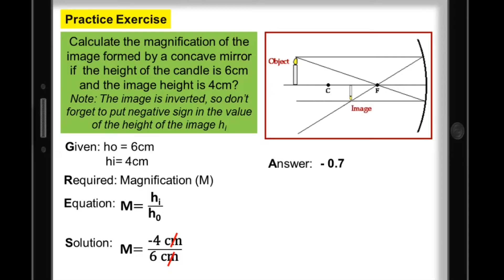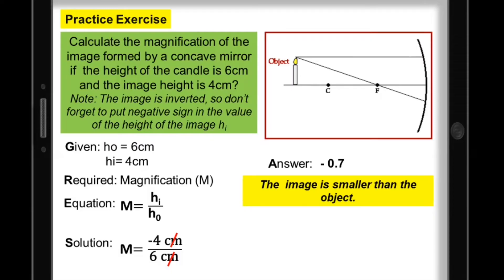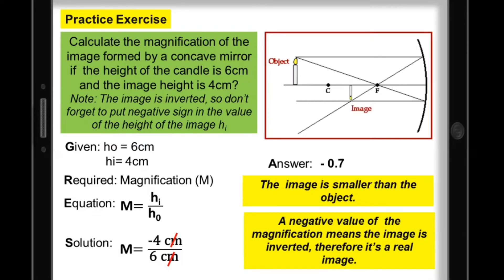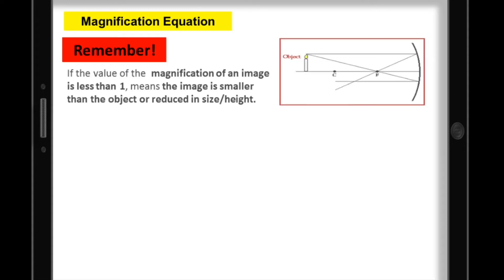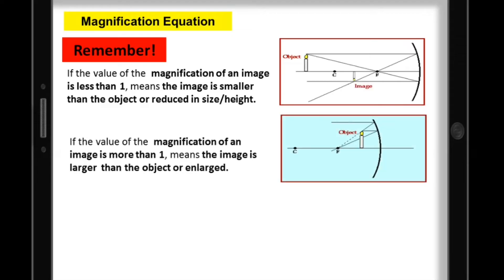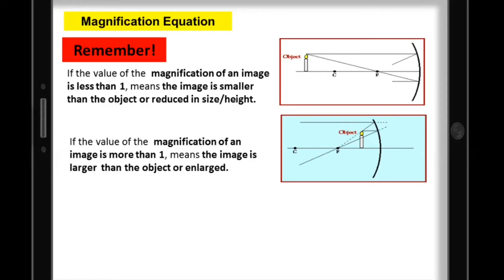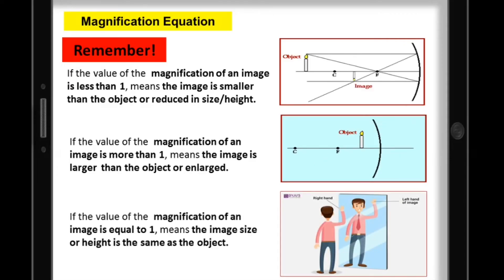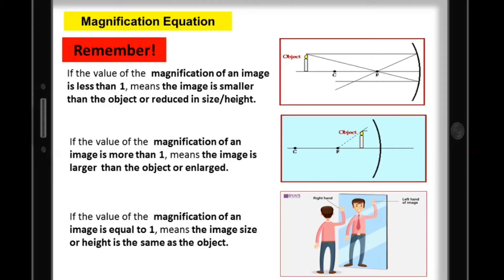The image is smaller than the object. A negative value of magnification means the image is inverted, therefore it's a real image. The magnification equation will help you describe the image formed by mirrors. If the magnification is less than 1, the image is smaller than the object or reduced in size. If the magnification is more than 1, the image is larger than the object or enlarged. And if the magnification is equal to 1, the image size is the same as the object — which is very common for plane mirrors.